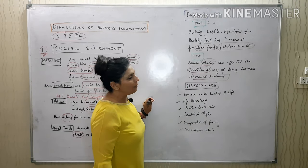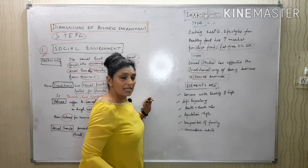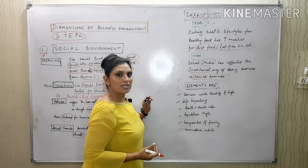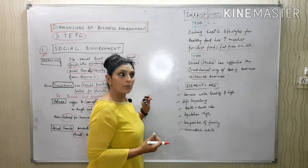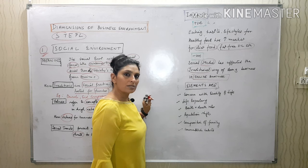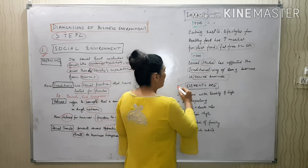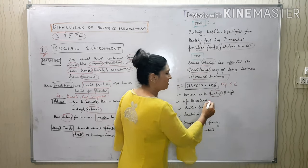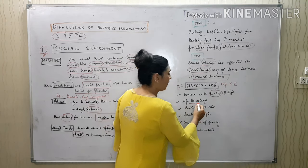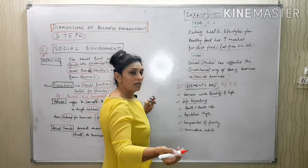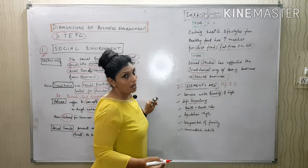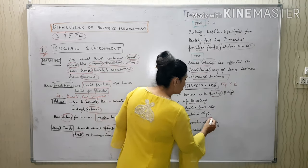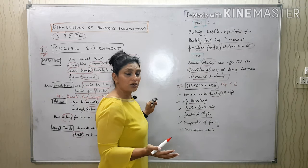What is trending these days is online business. Because of this attitude in society, traditional business owners have suffered a lot — because they do not know how to do online business. The elements of social environment are: concern with quality of life, life expectancy, birth and death rates, which affect society because we're talking about demography and population shifts.